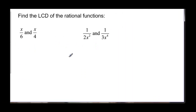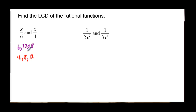Now let's think about finding least common denominators in practice. We have 6 and 4. One way to do this is to start listing all the multiples of 6: 6, 12, 18. Then list the multiples of 4: 4, 8, 12. I've found the first number they have in common, so the least common denominator is 12.